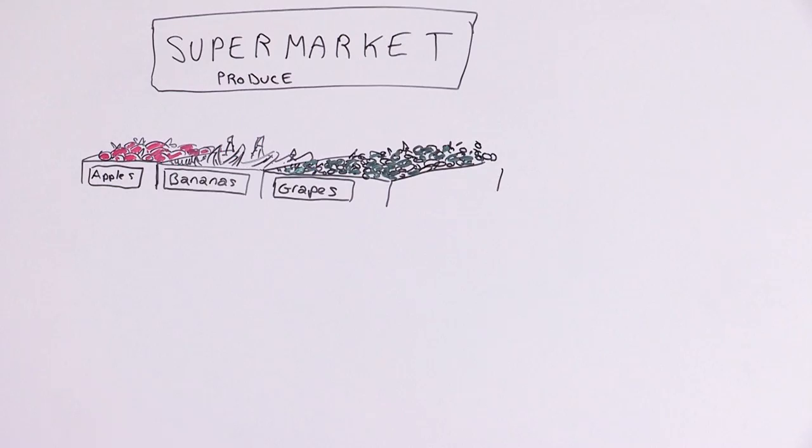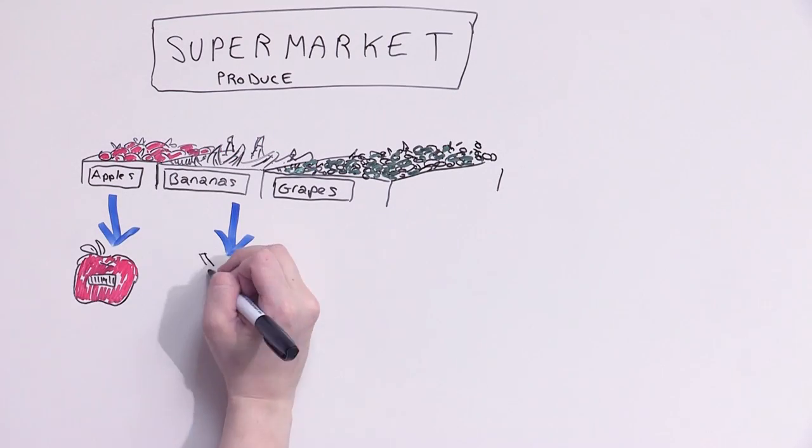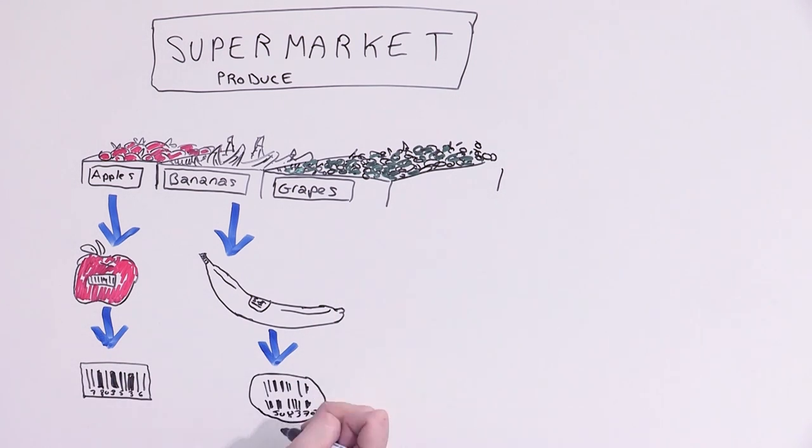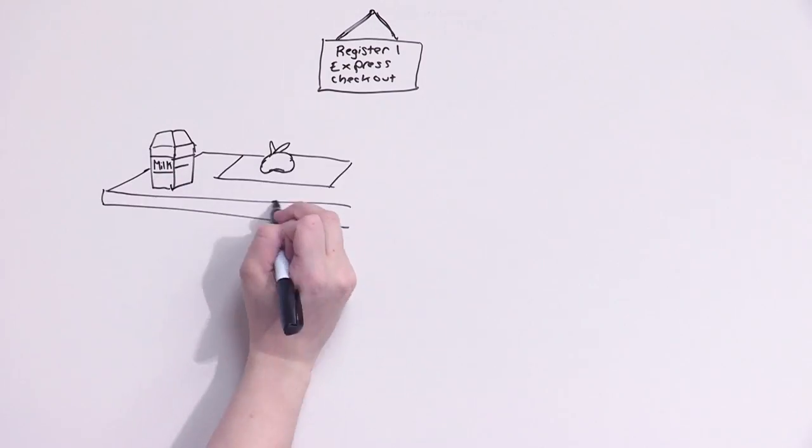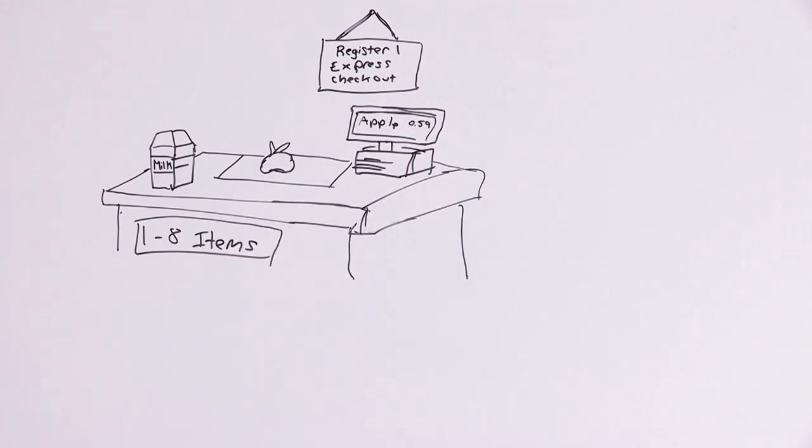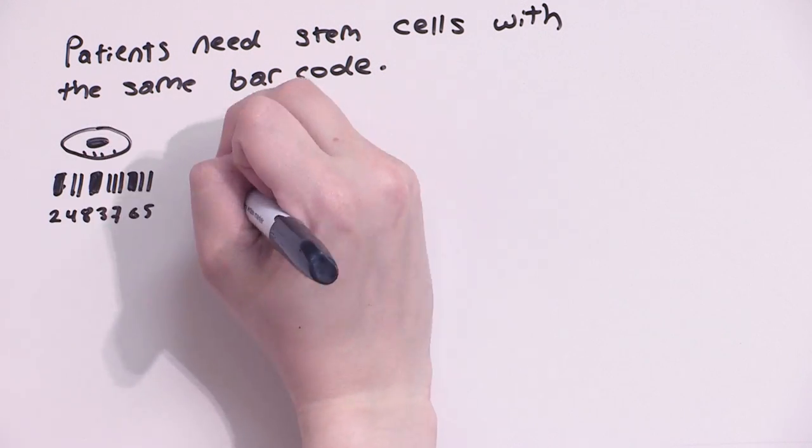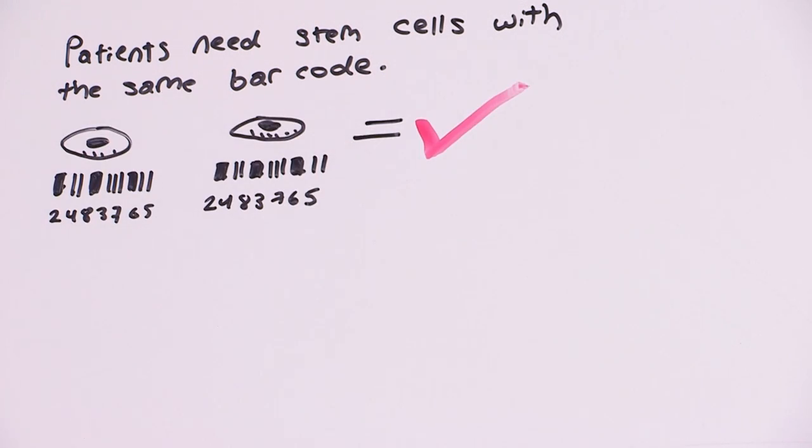Everyone's stem cells have a specific label. Think of the various barcode labels at the supermarket. Each type of fruit has a unique barcode label that allows the computer to recognize what kind of fruit it is. Patients in need of a stem cell transplant need to receive stem cells that have the same barcode label as their own.